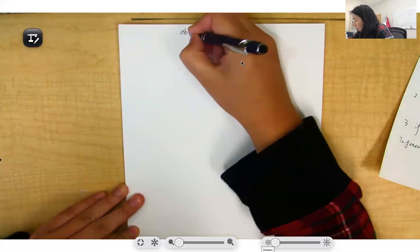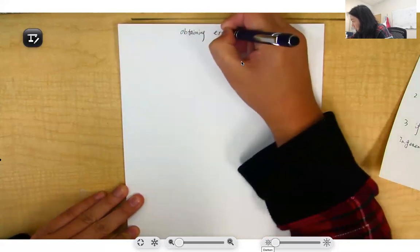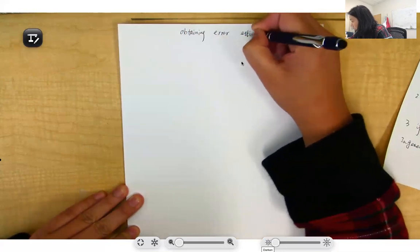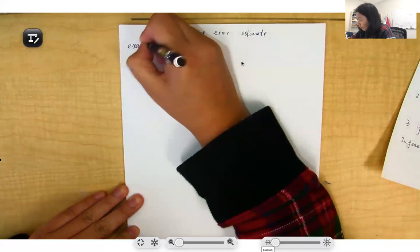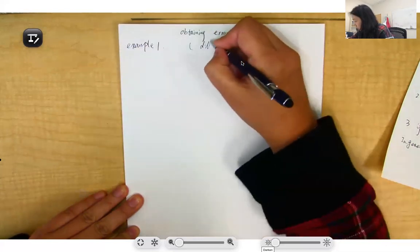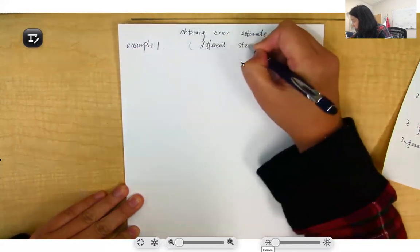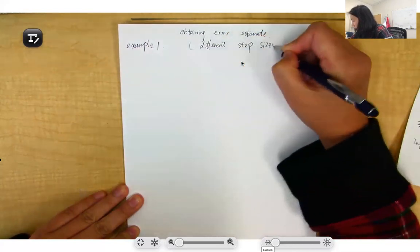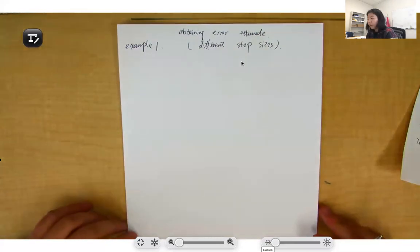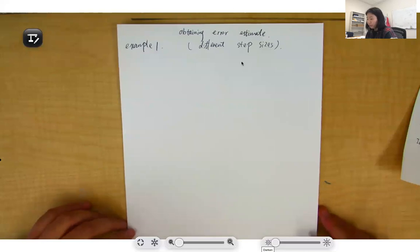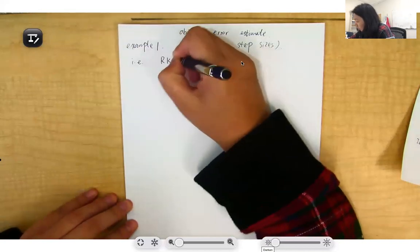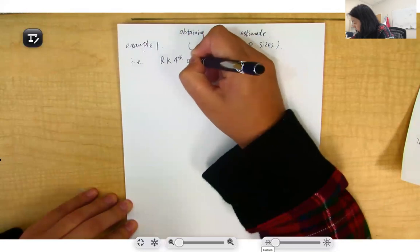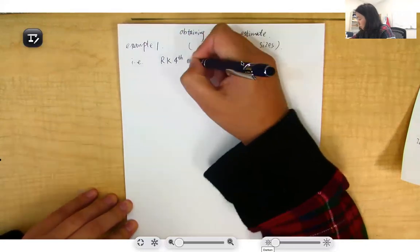Example 1: Obtaining error estimate using different step size. We will use Runge-Kutta method to solve this example, and we will choose the most common one, the Runge-Kutta 4th order solver.